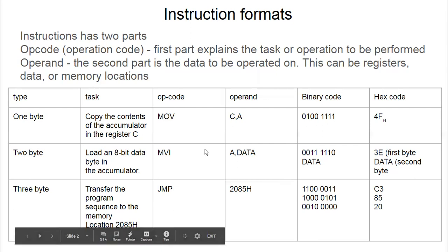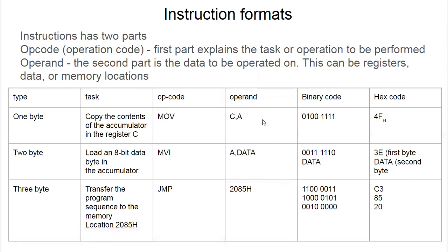For example, MOV C, A has a definite hex code — it is 4F. If it is C comma B it will be a different hex code, and all these are fixed by the manufacturer, which is why it is a single byte. For MVI A, there is one hex code and for the data another code, because the data is given by the user. So MVI A, MVI B, MVI C and so on each have their own fixed hex code.